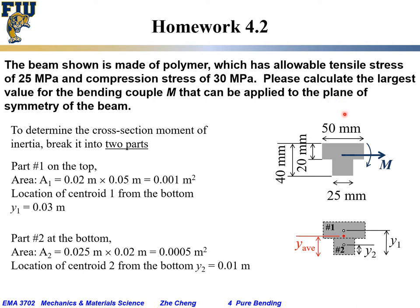The beam goes out of and into the screen — it is a straight prismatic beam with the same cross section throughout. To find the moment of inertia for the entire T-shaped cross section, we break it into two parts: part 1 on the top flange and part 2 at the bottom web.